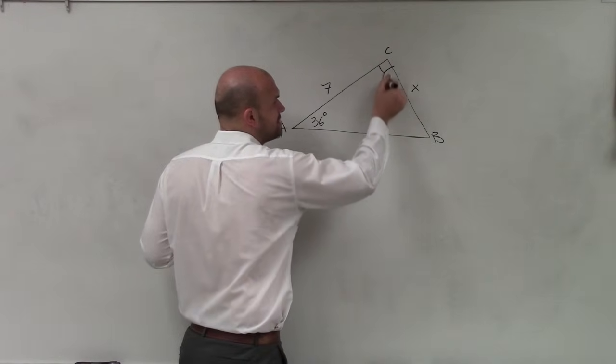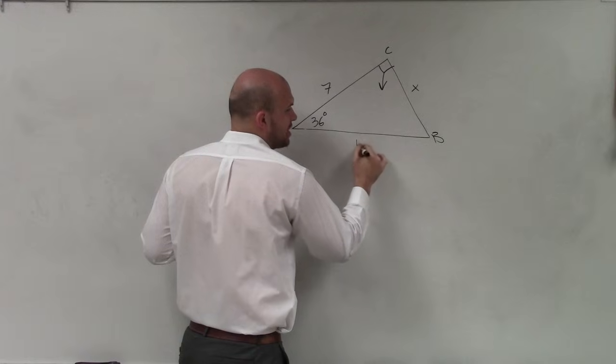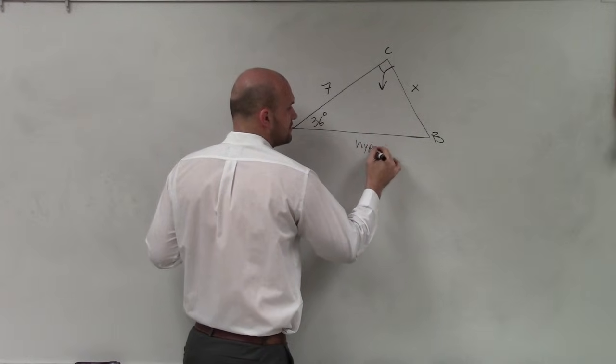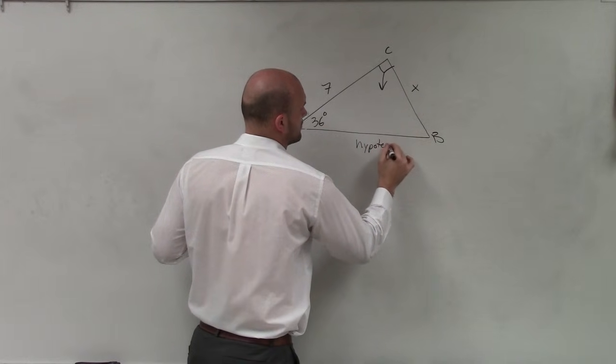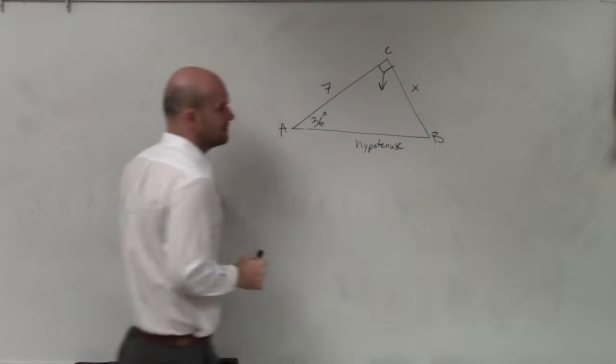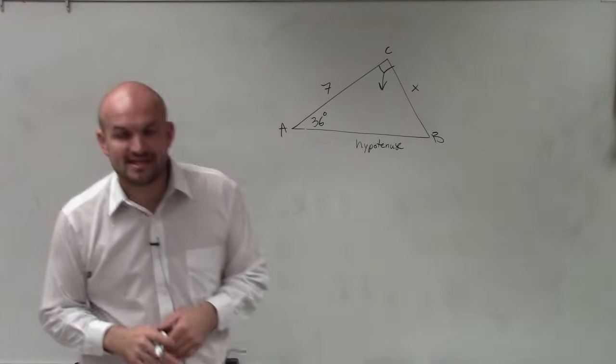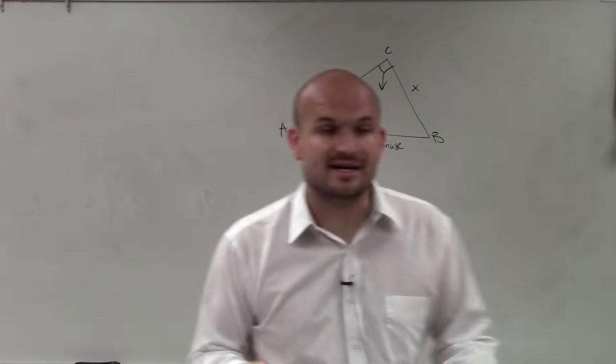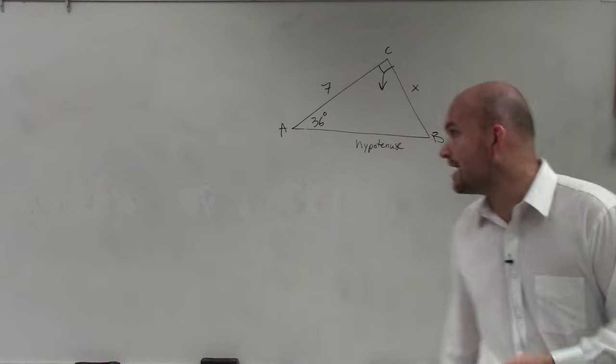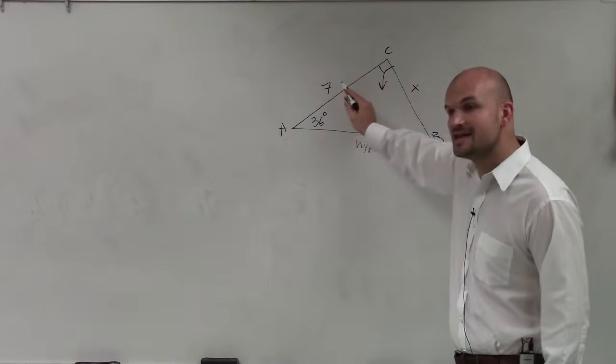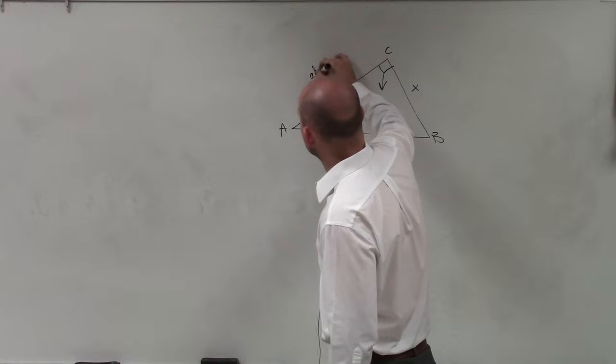Well, obviously, the first thing we can do is determine that my hypotenuse is directly across from my right angle. Then remember, the adjacent side is always the side that connects your angle to your right angle. So you can see that 7 is going to be my adjacent side.